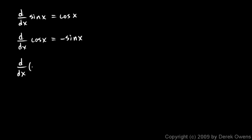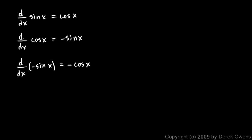Now what's going to happen if we differentiate the negative sine function? This ends up being really easy. The derivative of negative sine x — negative sine x can just be thought of as negative 1 times sine of x. A constant multiplied by a function: when we take the derivative, the constant pops out front as a constant multiplier. So this negative 1 pops out front, and we have the negative of the derivative of sine x, which is negative cosine x.